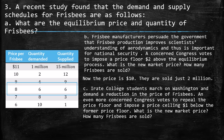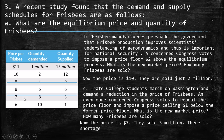Part C: college students march on Washington demanding a reduction in Frisbee prices. Congress repeals the price floor and imposes a price ceiling $1 below the former price floor. The former floor was $10, so $1 below gives a new price of $7. At this price, only 3 million Frisbees are sold. There is a shortage because the price is so low for sellers that they only offer 3 million, while people demand 8 million at that price.